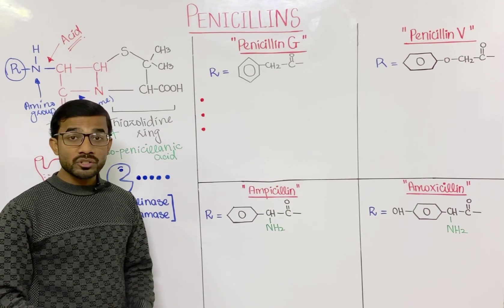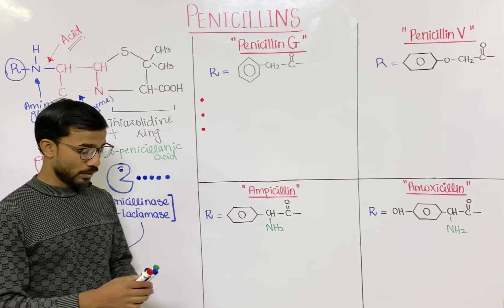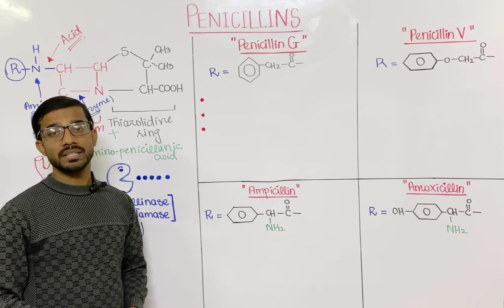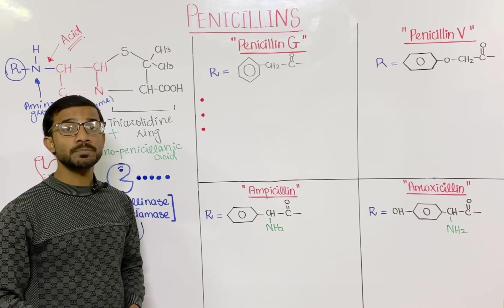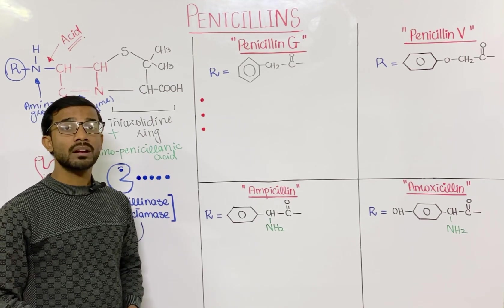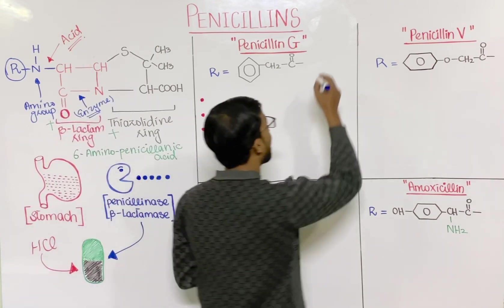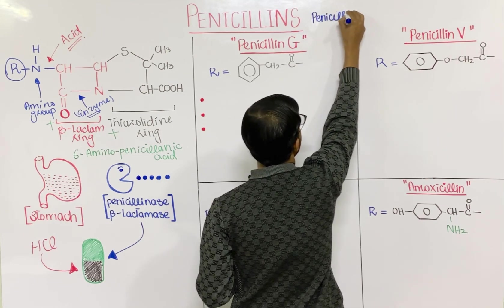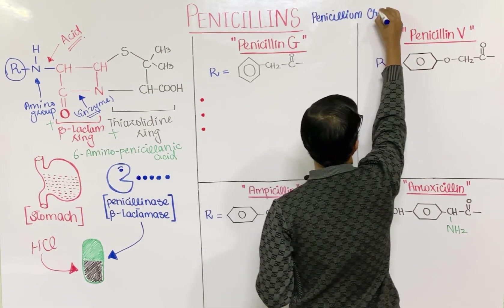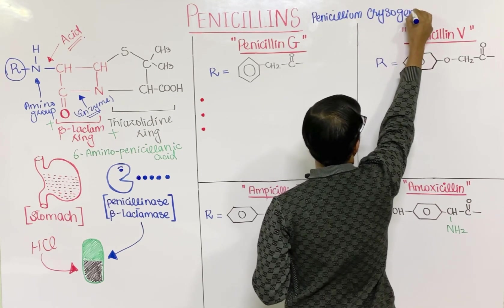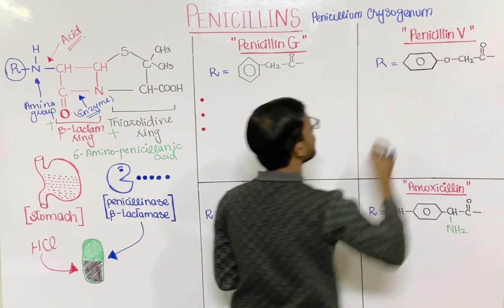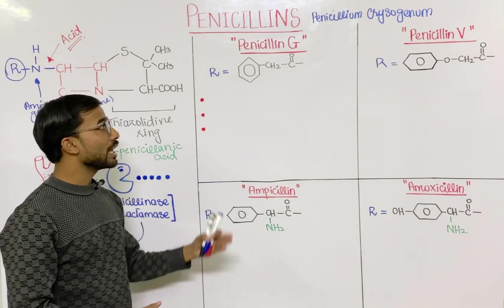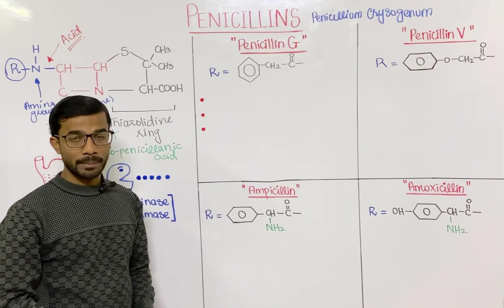Now we will discuss the natural forms of penicillin: penicillin G and penicillin V. These penicillins are actually produced by the fungus Penicillium chrysogenum. That fungus naturally produces penicillin G and penicillin V, which is why they are called the natural forms of penicillin.